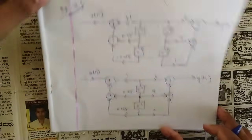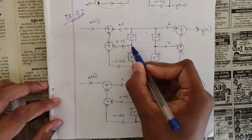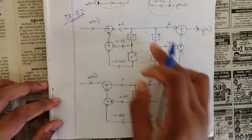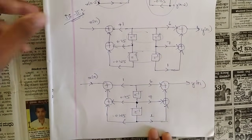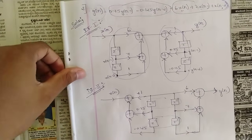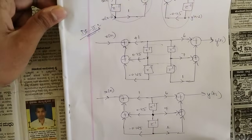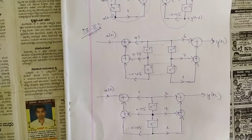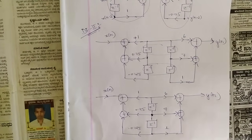In the final DF2 structure, the common delays are merged into single delays. Whatever was in the output side is written in the input side and vice versa. This is the standard way to derive DF2 from DF1. IIR structure problems like this are typically worth six marks in the exam, so note it carefully. Let us now solve one more problem.